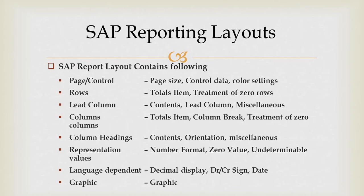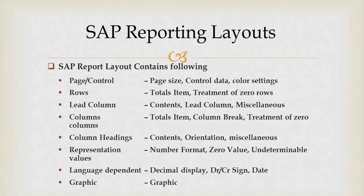There is also a lead column section — you can specify which is a lead column — and columns for the total item and column break. You can also set the treatment of zero values; for example, if you have any data which is zero, you can exclude this in the report.